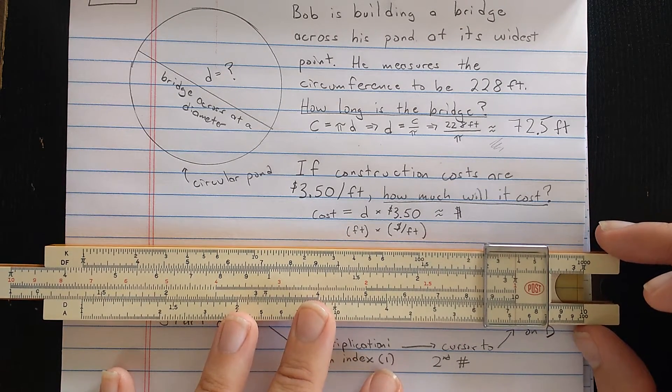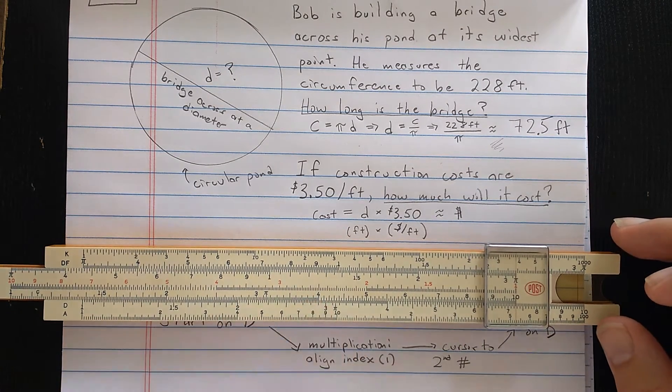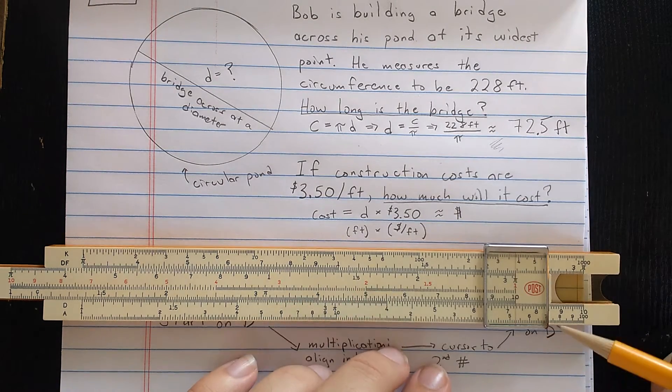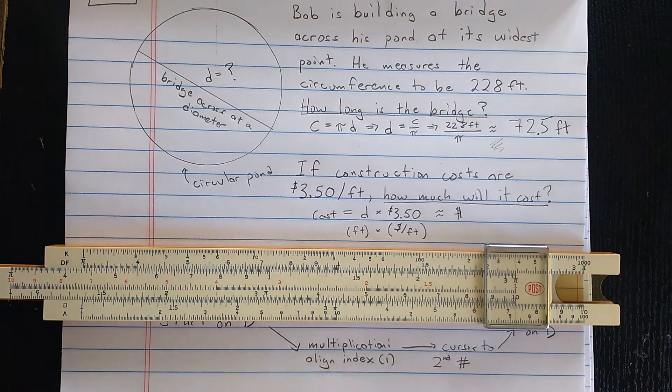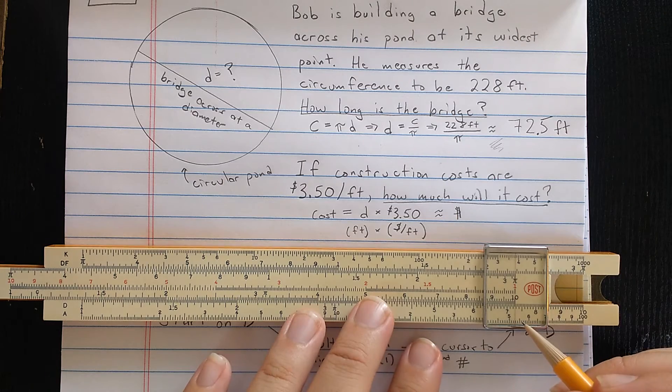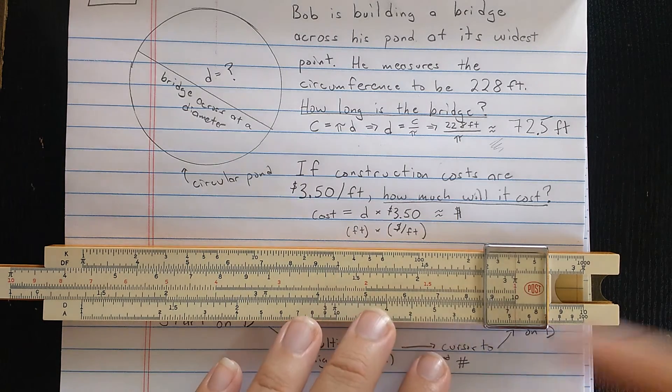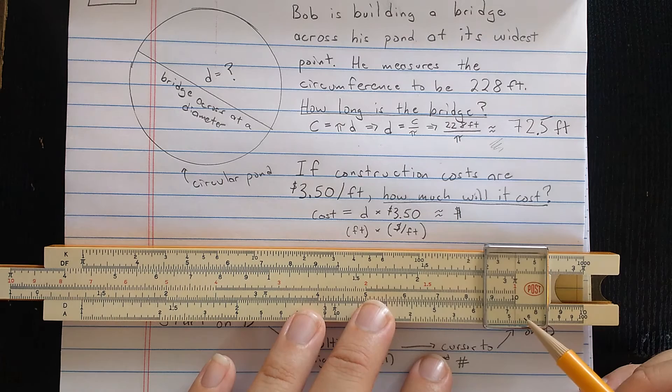So it turns out to multiply using the C and D scale, what you should do is start with the first number on the D scale. That's already convenient. If I was going to do a different calculation, I would move the cursor to the number I want on the D scale.